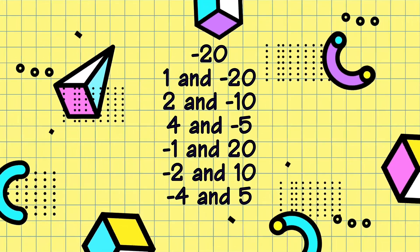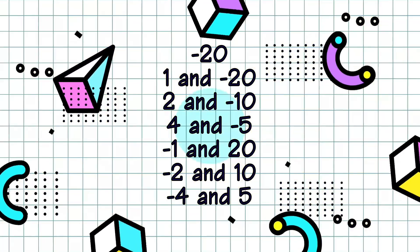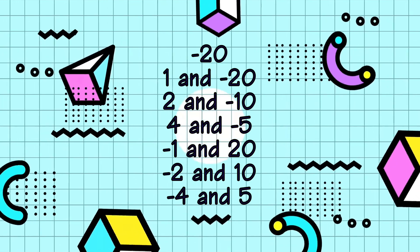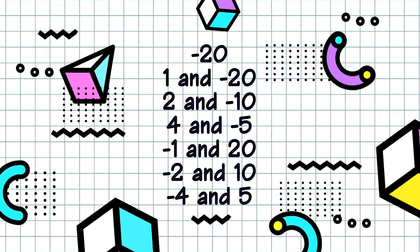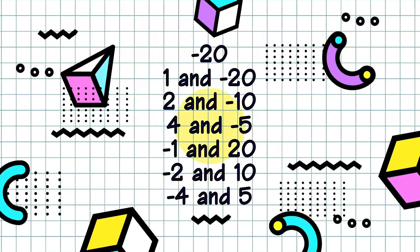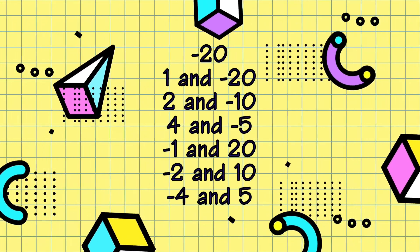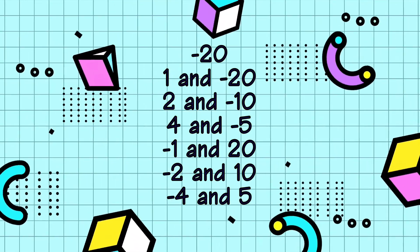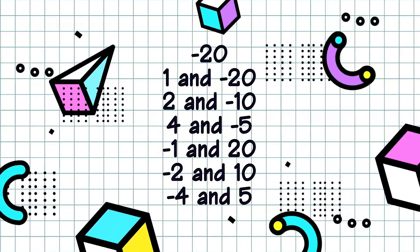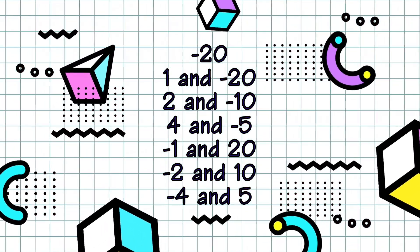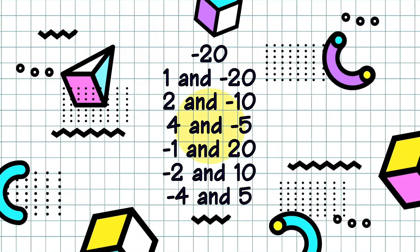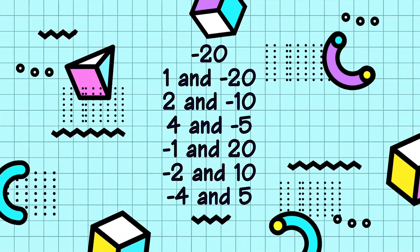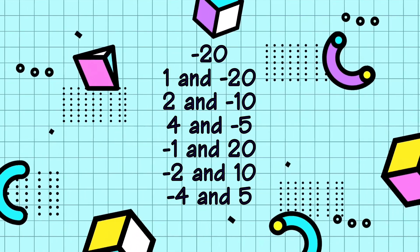Next is negative 20. The factors of negative 20 are 1 and negative 20, 2 and negative 10, 4 and negative 5, negative 1 and 20, negative 2 and 10, and negative 4 and 5. If we are going to multiply these pairs of numbers, this will give us the result of negative 20.